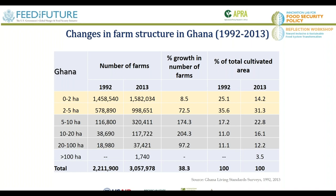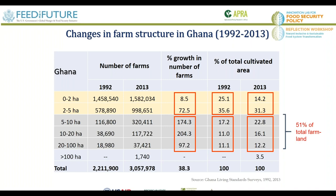In 1992, small-scale farming (0 to 5 hectares) accounted for about 60% of all farmland under cultivation in Ghana. By 2013, that percentage shrank to about 45%, while the share of cultivated area in medium-scale farmland (5 to 100 hectares) increased dramatically to slightly over half of all area cultivated in Ghana. In Zambia, it's about 55% and rising rapidly — I predict that in 10 years medium-scale farms in Zambia may account for 60-70% of total cropland.